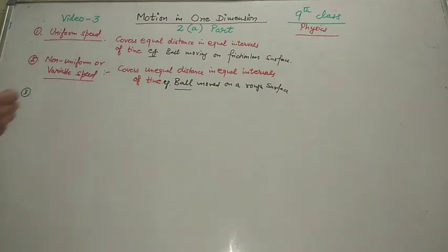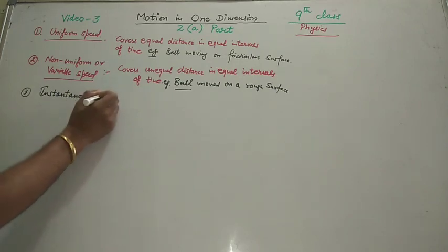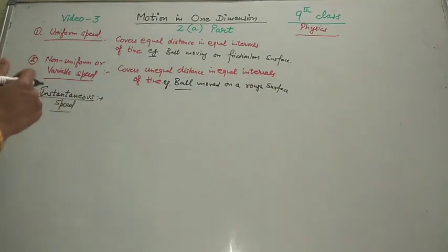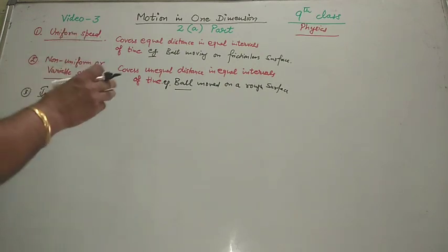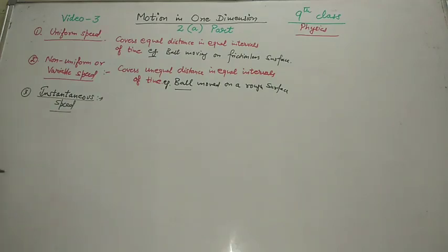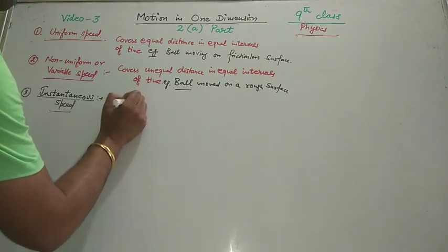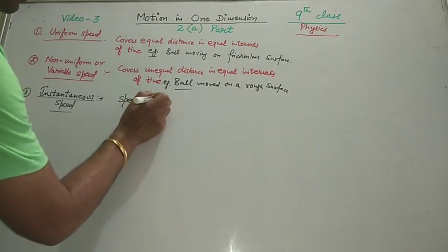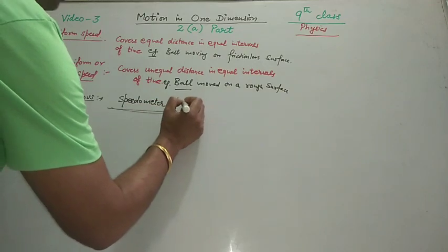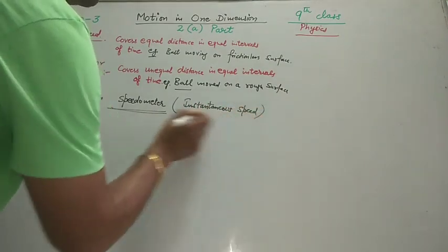Third is instantaneous speed. Instantaneous speed means when the body is moving with a certain speed and we are observing that speed for a very short interval. For example, suppose you are moving in any vehicle — it can be a scooter or a car — the speedometer tells you the instantaneous speed for a very short interval.